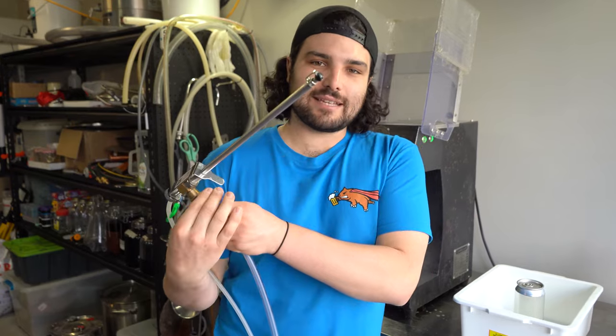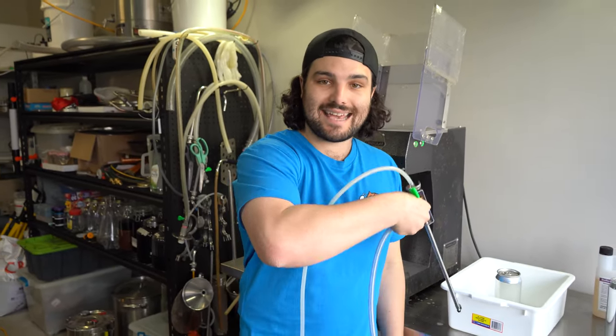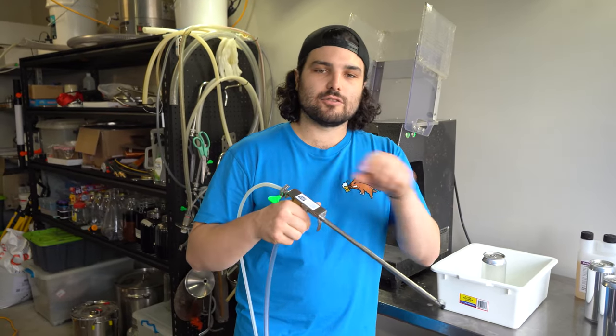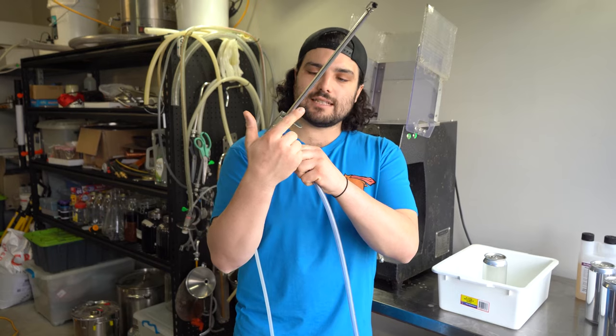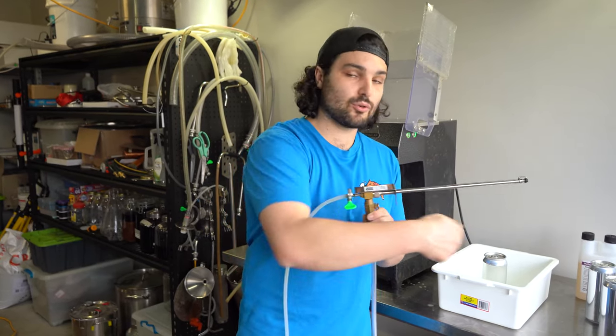First button here opens up the gas so that basically you use to purge the can to get rid of all the oxygen in there and make a little blanket of CO2. Next button, this lever here is the thing that opens up the beer line so the beer starts flowing in through into the can.